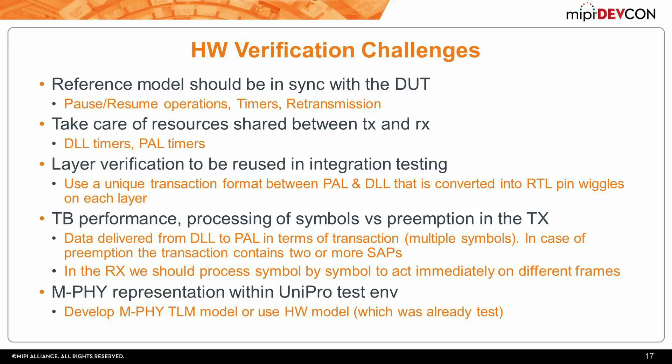To ease integration between the two layers, try to unify the transaction used in both of them. For test bench performance, we decided not to pass symbol by symbol from the data link to the PAL layer, because this causes a big performance overhead. Instead we deliver a large transaction from the data link to the PAL. In case of retransmission or preemption, the transaction itself will contain the preempted data in one go, and the PAL layer has the ability to interrupt itself and stop sending the transaction it received from the data link. In the reception path, we deliver symbol by symbol from the PAL to the data link so we can act immediately on retransmission scenarios.